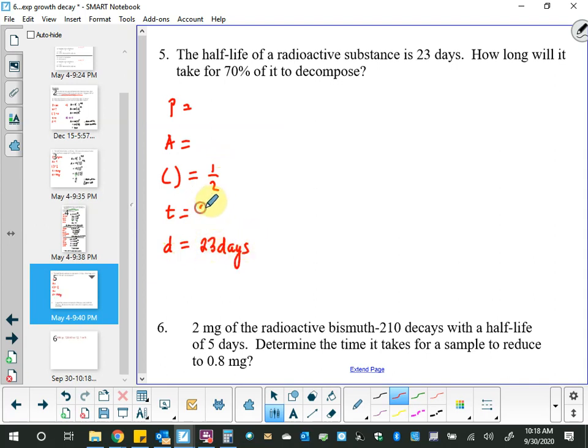Half-life of a radioactive substance is 23 days. How long time will it take for 70% of it to decompose? This is tricky because I don't want you to put 70% in here. Because A represents how much is left. So, if it's 70% of it to decompose, that means there's 30% left. And 30% is what I put in the final slot. 100% is what I put in the initial slot.